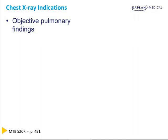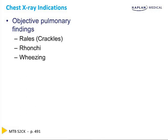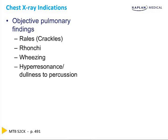Along with the subjective complaints just discussed, there are several exam findings you may see on the test which also warrant a chest X-ray if you are asked about the next step in management. Crackles, or rales, indicate fluid in the lungs, often secondary to pulmonary edema, and rhonchi are indicative of bronchial airway obstruction, sometimes secondary to COPD. These diagnoses can both be made from chest X-ray. On Step 2, wheezing is often associated with asthma, which cannot be diagnosed via chest X-ray, but can also be indicative of an underlying tumor. Hyperresonance or dullness to percussion can be secondary to a pneumo or hemothorax.